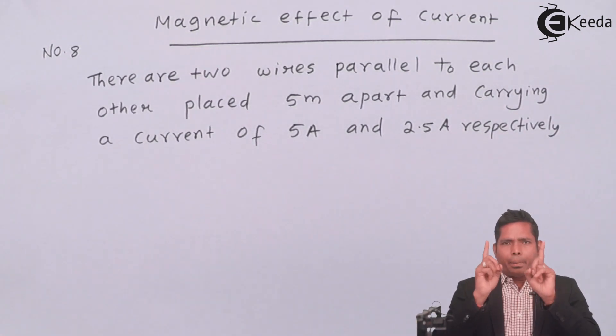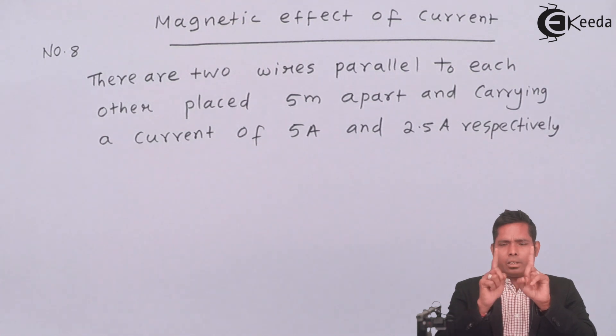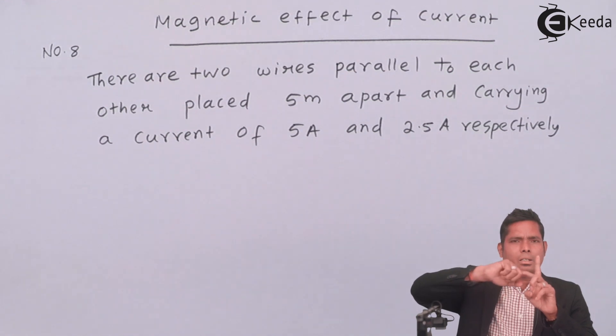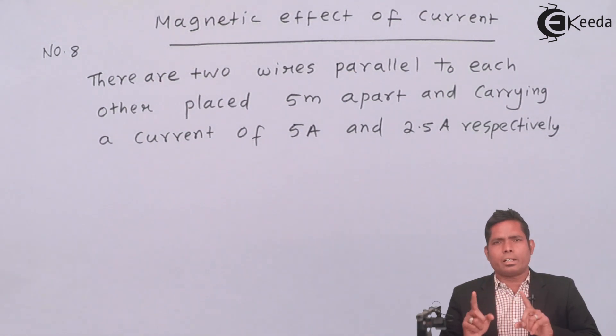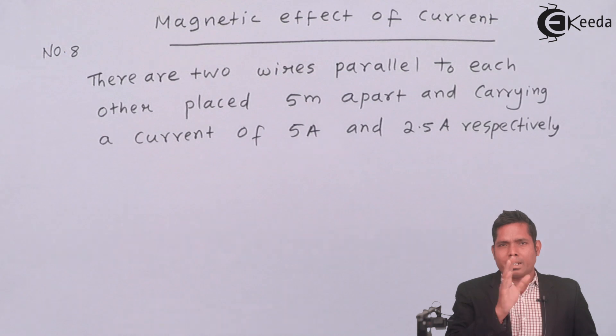There are two wires parallel to each other and the separation between the two wires is 5 meter. One wire carrying current of 5 ampere, the other one is also carrying current of 2.5 ampere, exactly half of that.